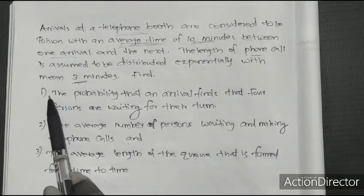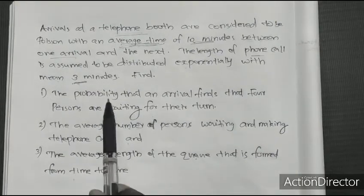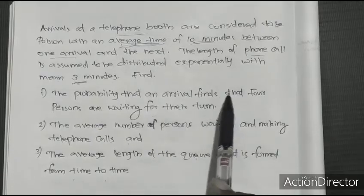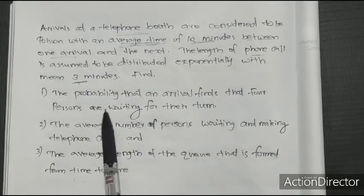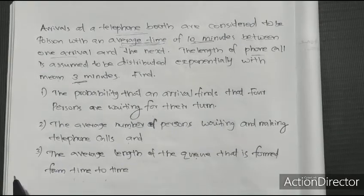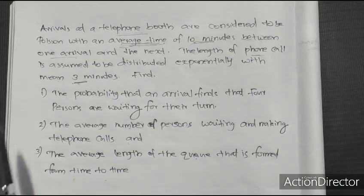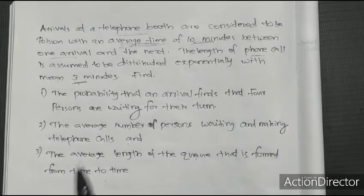The first question is: the probability that an arrival finds that 4 persons are waiting for their turn. So 4 people are waiting for their turn.